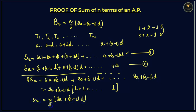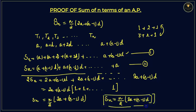Moving 2 to the denominator, the answer is Sn is equal to n by 2 multiplied by 2a plus n minus 1 times d, and that is the proved formula for the sum of n terms of an AP.